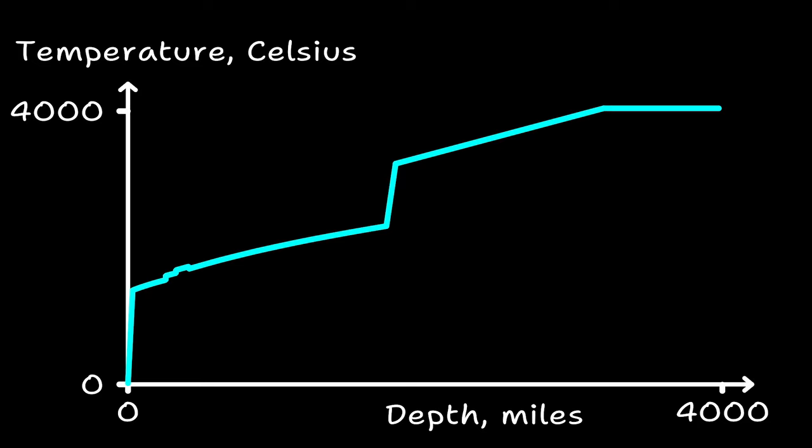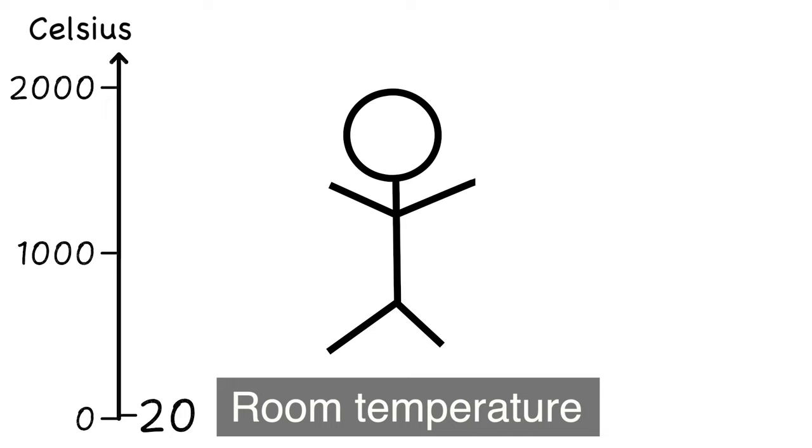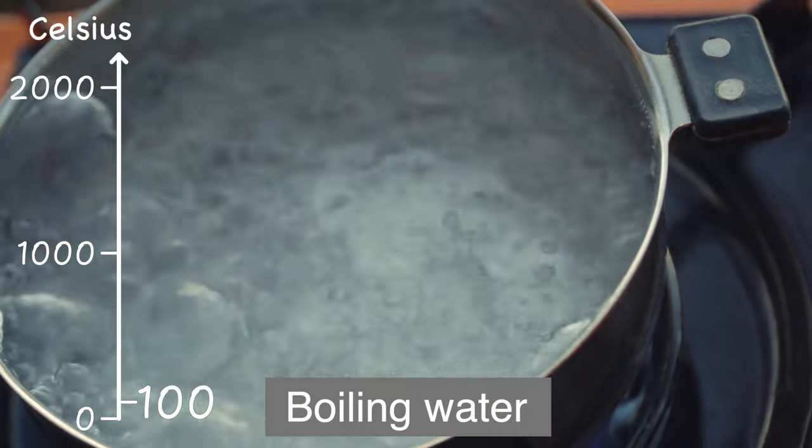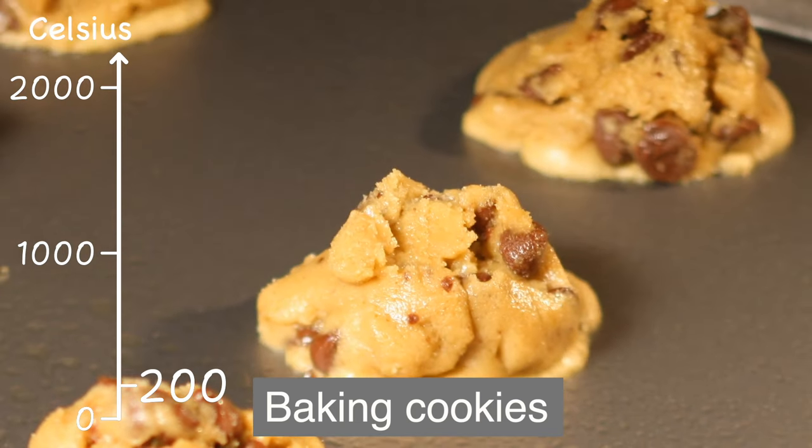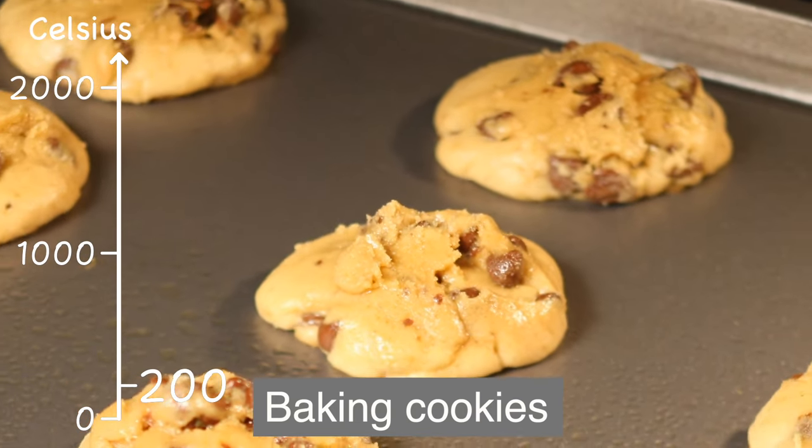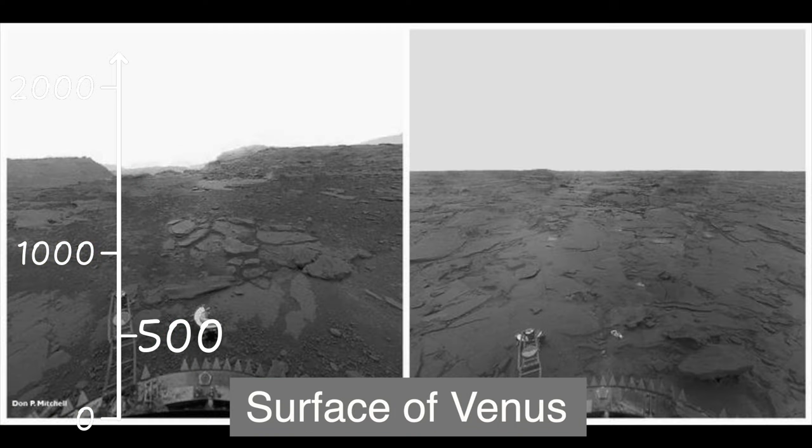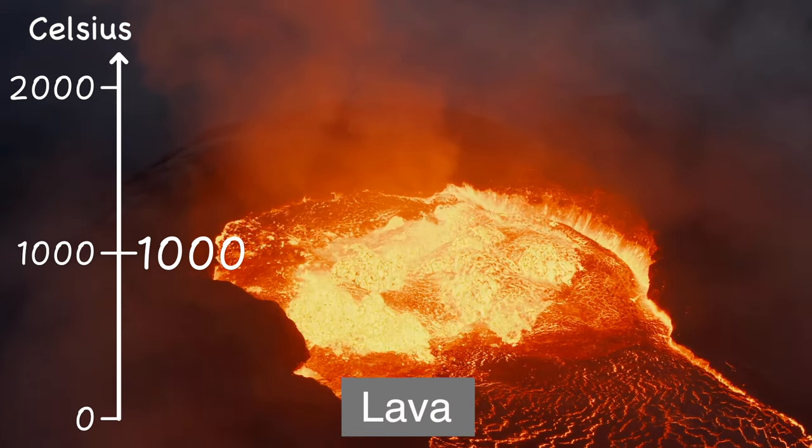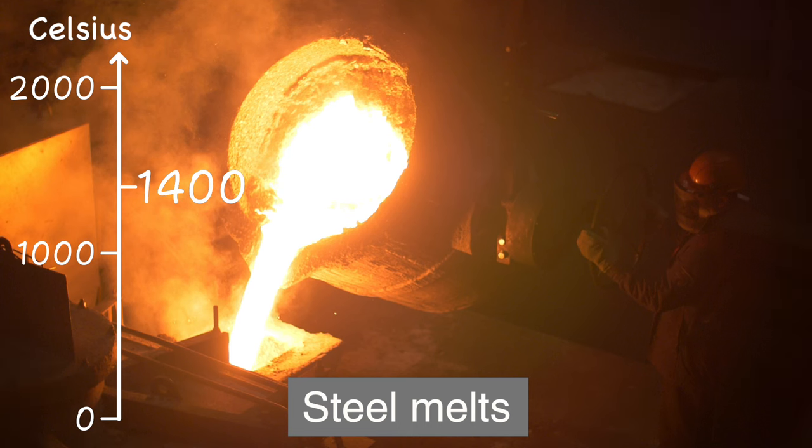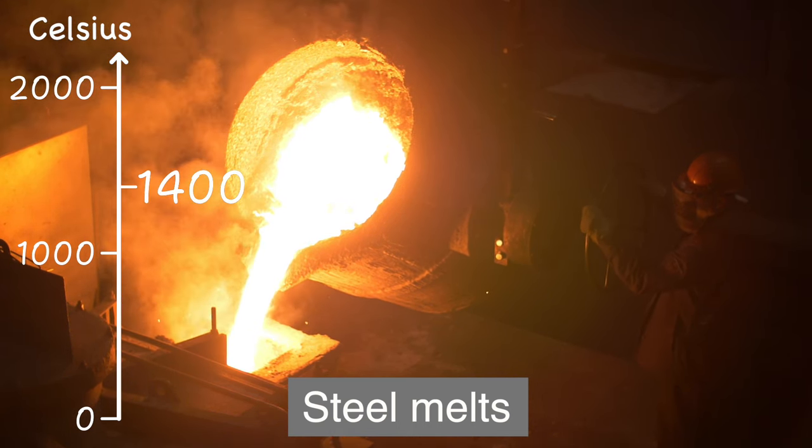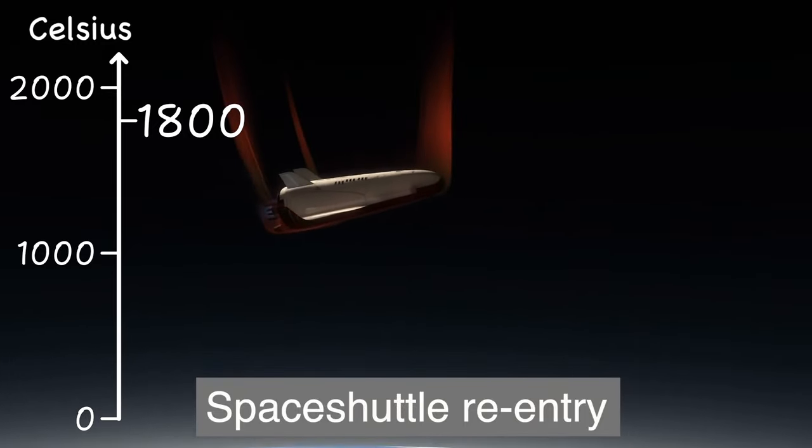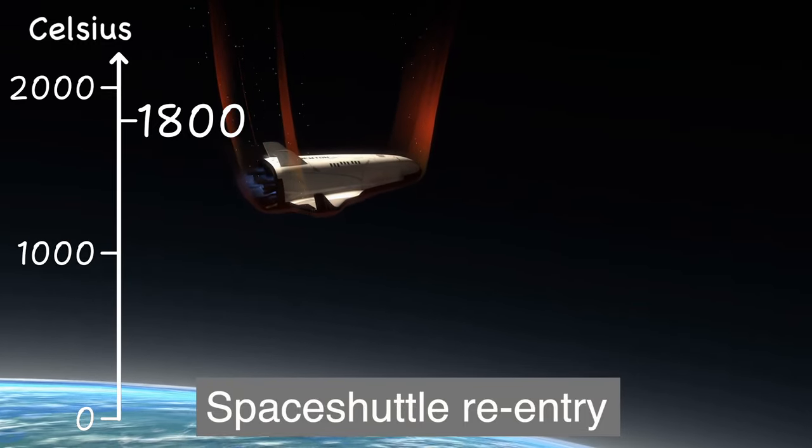Let's assign some meanings to these temperatures. 20 Celsius is room temperature. 100 Celsius is the boiling point of water. 200 Celsius is baking cookies. 300 Celsius is a soldering iron. 500 Celsius is the surface of Venus. 1000 Celsius is lava. 1400 Celsius is the melting point of steel. 1800 Celsius is the temperature of space shuttle re-entry.